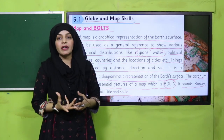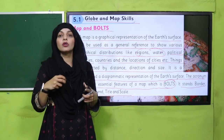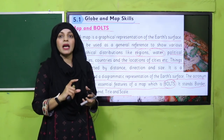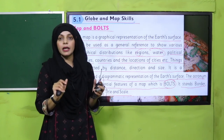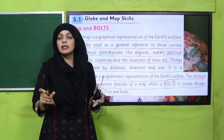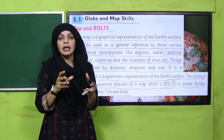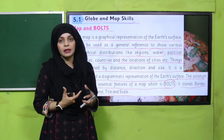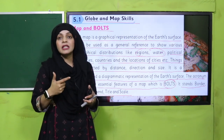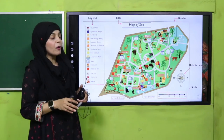The acronym BOLTS stands for five essential features of a map: border, orientation, legend, title, and scale. A map is the topmost graphical representation of the earth's surface, showing water, land, and political boundaries with lines. Distances are shown through scales. We will see further how such a large world is represented on a small piece of paper. The five key elements required to study a map are called BOLTS — an acronym standing for border, orientation, legend, title, and scale.